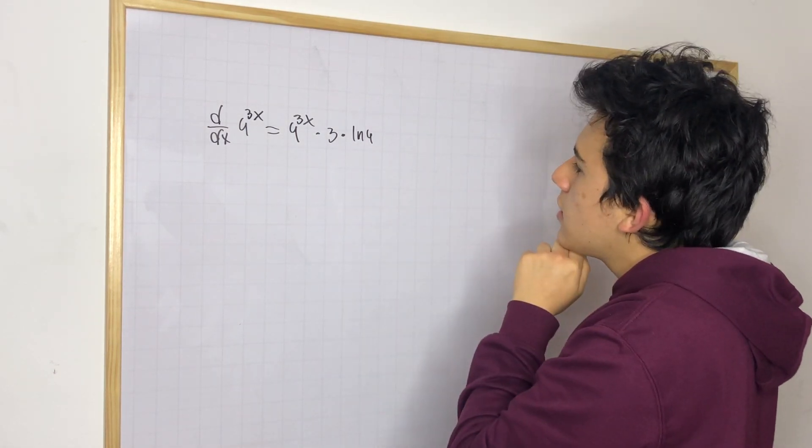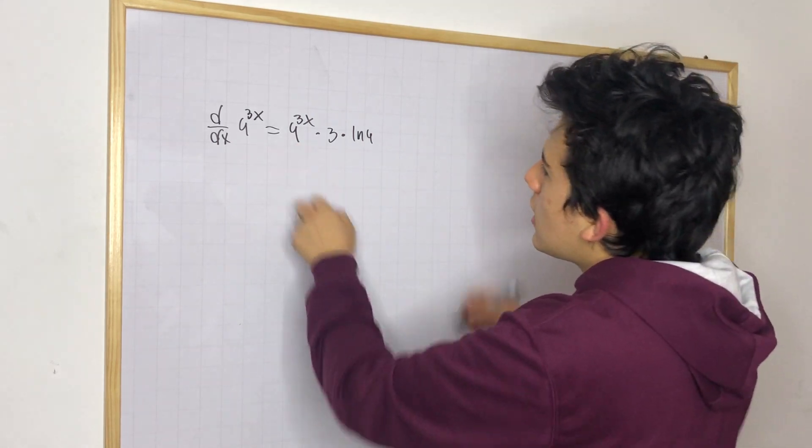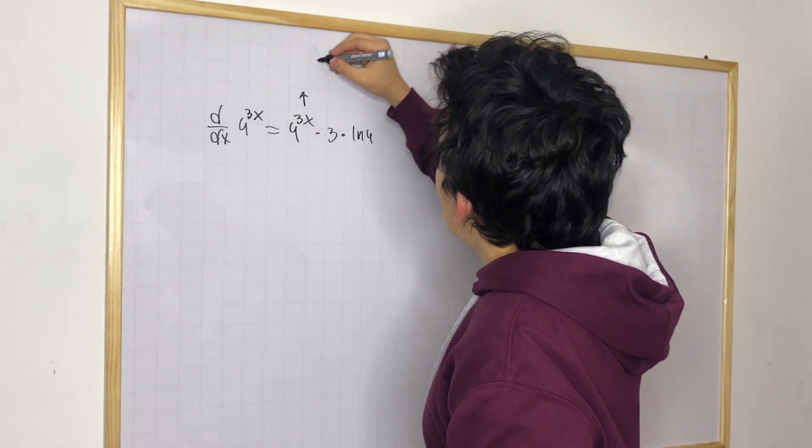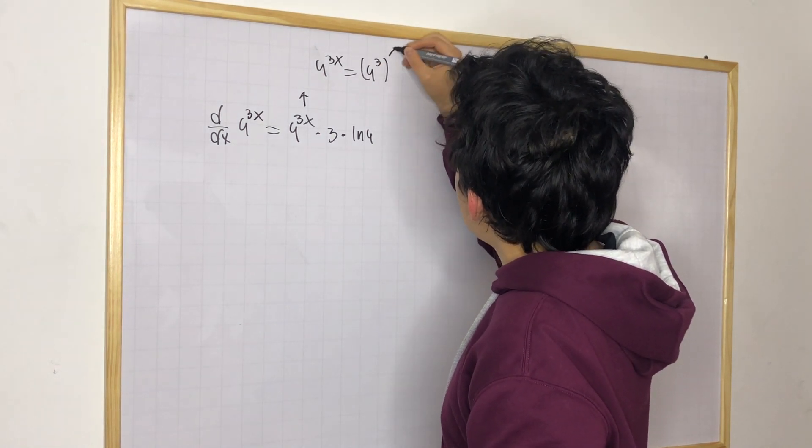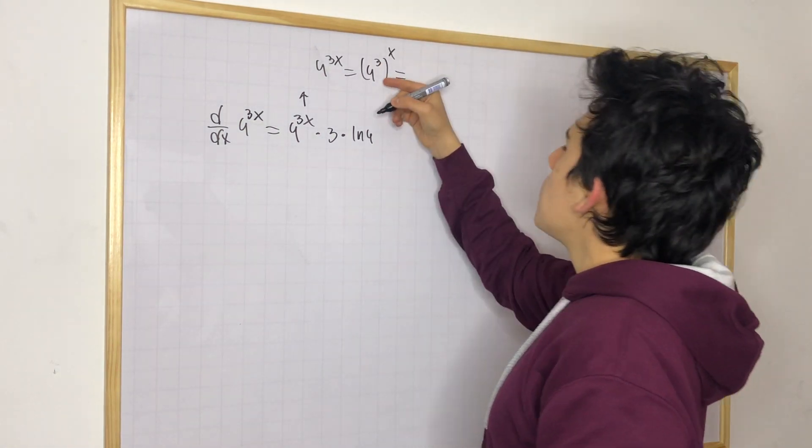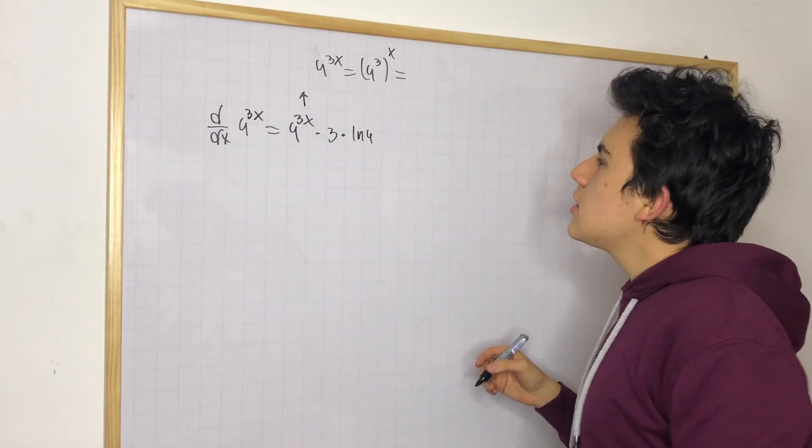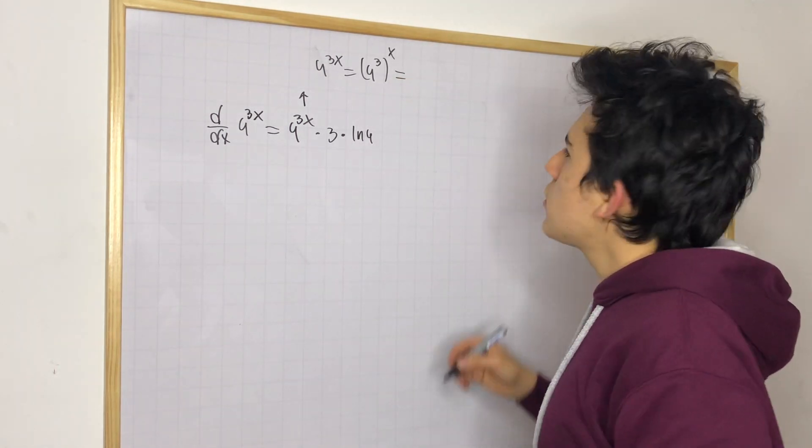Now, how can we simplify this? One thing you can do is that, in this case, 4 to the 3x is the same as if you had 4 to the 3rd power to the x power. And we know this is going to be 16 times 4, 32, 64.